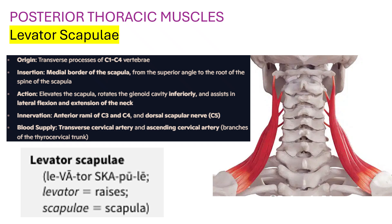Innervation is anterior rami of C3, C4, and dorsal scapular nerve, C5. Blood supply is the transverse cervical artery and ascending cervical artery, branches of the thyrocervical trunk.